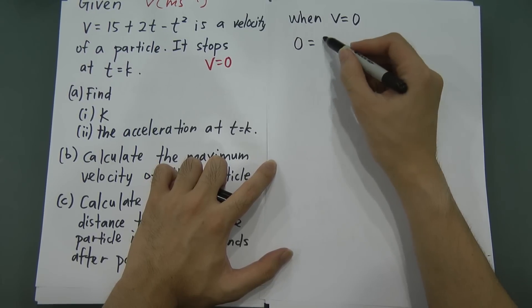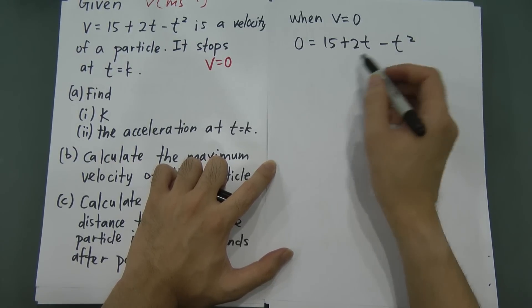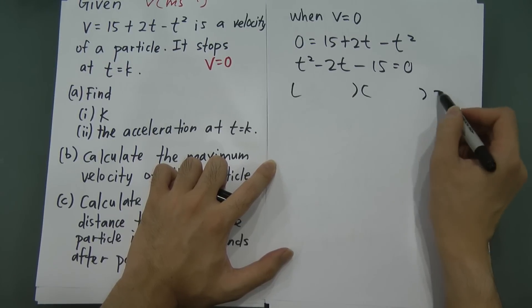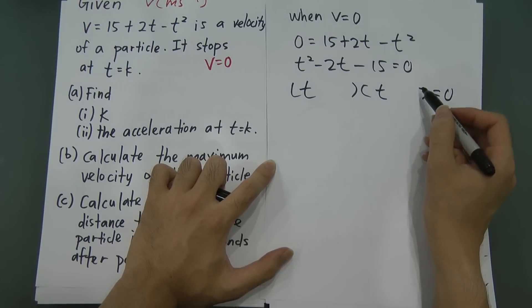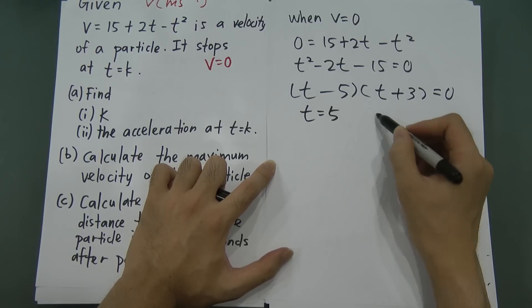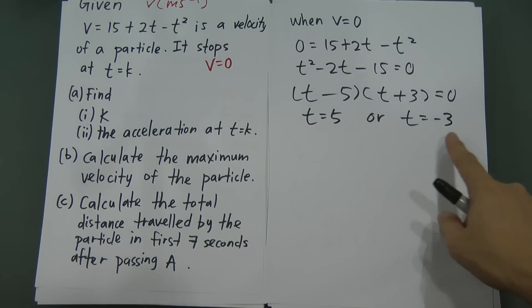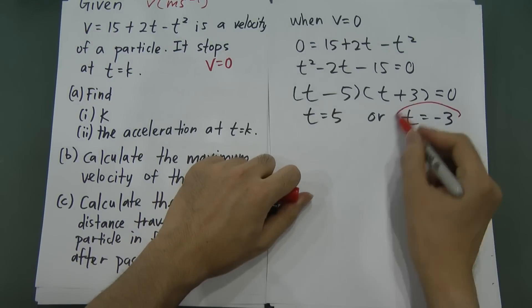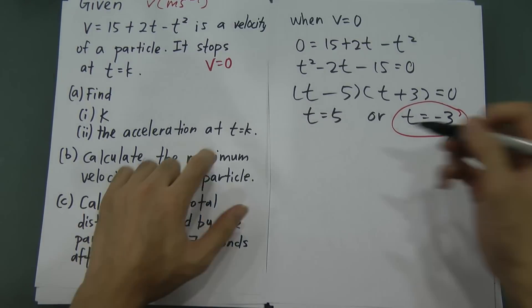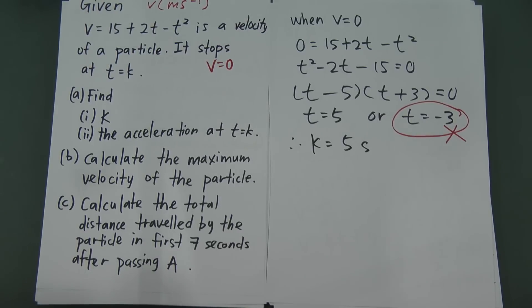Rearranging: t² − 2t − 15 = 0. Factorizing: (t − 5)(t + 3) = 0, so t = 5 or t = −3. Since time cannot be negative, t = 5. Therefore k = 5 seconds.